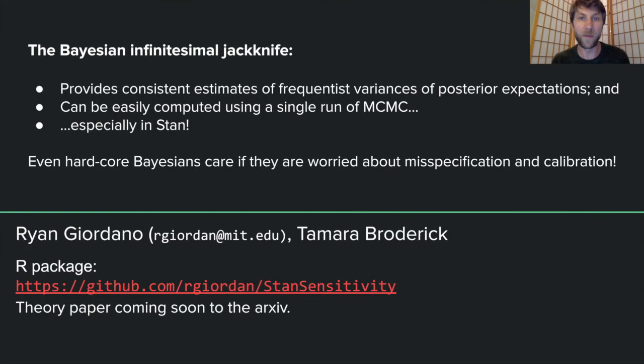In conclusion, the Bayesian infinitesimal jackknife provides consistent estimates of the frequentist variance of posterior expectations and can easily be computed with a single run of MCMC, unlike the Bootstrap. It works especially well in Stan because the log-likelihood is already implemented for you. I hope that you believe that even hardcore Bayesians would care if they're worried about misspecification. Our package is here. We have a theory paper that just needs some prettying up, so that will hopefully be coming soon to the arxiv. Again, I'm Ryan. My advisor and co-author is Tamara, and I welcome any questions. Thanks.